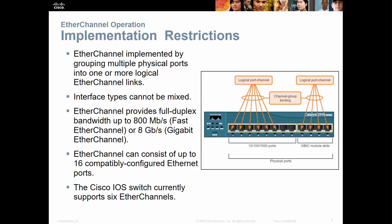EtherChannel is implemented by grouping multiple physical ports of the same type. It needs to provide full duplex. You can do groups of eight — here we have Fast Ethernet, you could do a Fast EtherChannel, so that'd be eight 100-megabit connections — or you can do eight Gigabit EtherChannels, so that's going to be eight gigabit links.